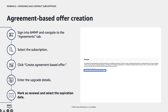Lastly, select the option to mark the agreement as a renewal and select the agreement-based offer expiration date. Once the offer has been reviewed and created, allow up to 45 minutes for the agreement-based offer to generate in the Offers tab of your AMMP. Here you will find the newly created agreement-based offer where there will be a new offer ID and the unique offer URL that can be sent to the buyer to subscribe.